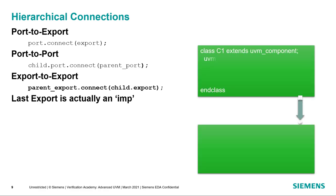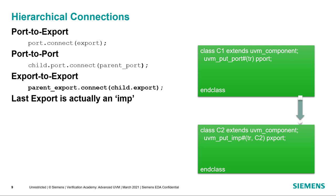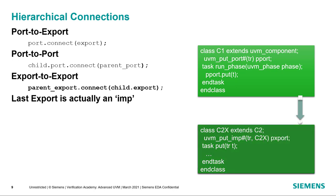In C1, we define the port parameterized by the transaction type, and the target supplies the implementation, which has two parameters: the transaction type and the component that actually contains the implementation. In C1's run phase, we call the put method of the port and pass in the transaction, and that causes the method supplied in the implementation to be called with that same argument. When we call put from C1, the implementation in C2 determines what happens. If we replace C2 with a different implementation, it still takes the transaction from C1 and does something to it — the semantics of having that transaction go from C1 to C2 are still in effect.